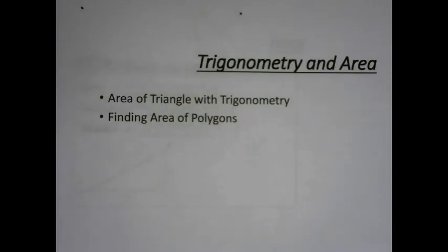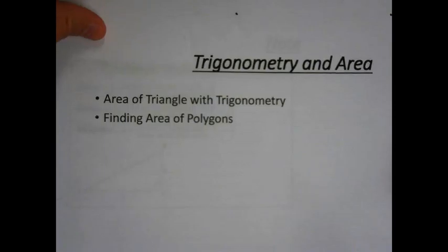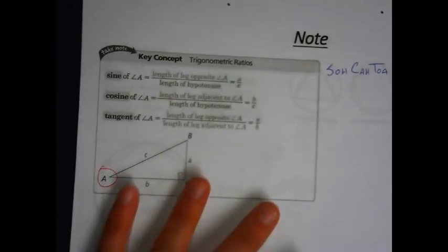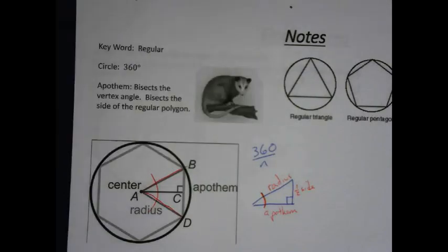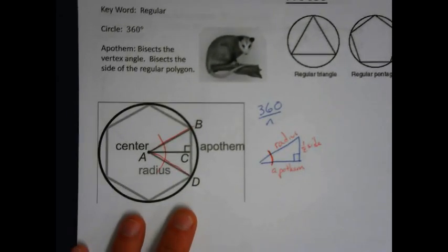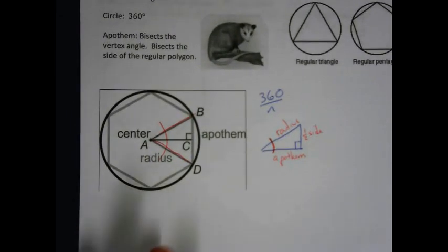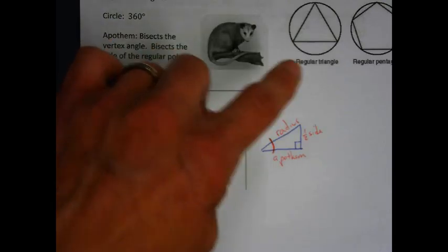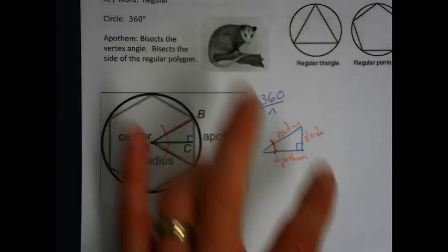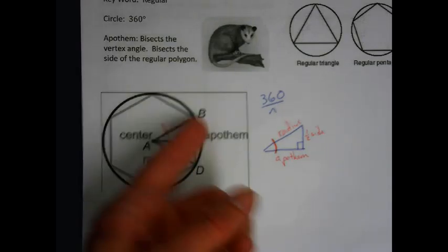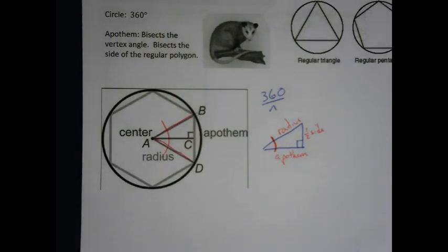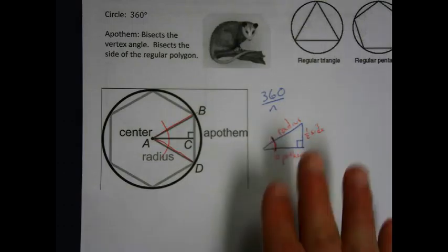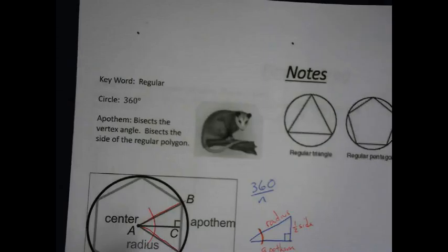Welcome back to the lesson on trigonometry and area. This is the third video, and we're going to wrap it up with finding area of polygons with more challenging examples. We're using some older material — trigonometry and the area of regular polygons — remembering vertex angles, pop-out triangles, and how to figure all of that out. We did a few examples in the second video, so make sure you're following that before jumping into this, because these last two examples are a little bit challenging. So let's jump in.